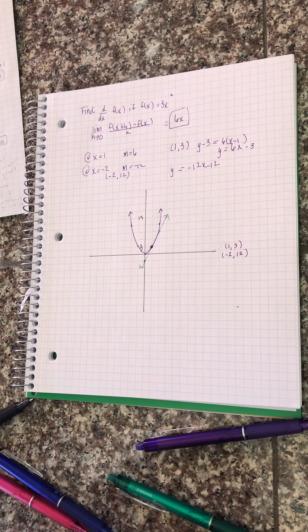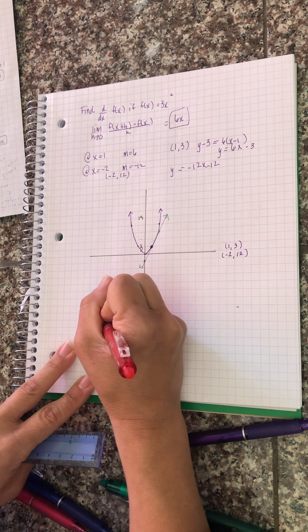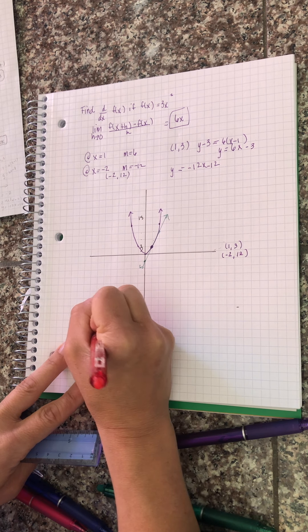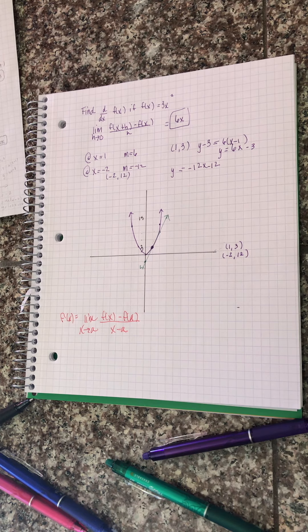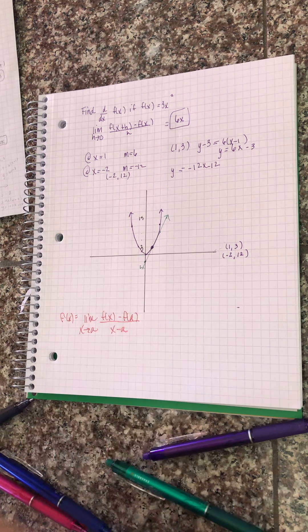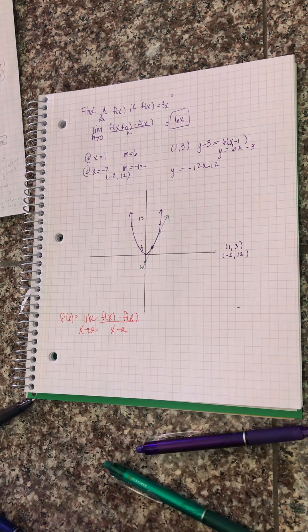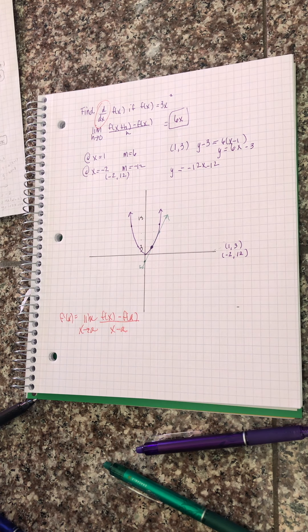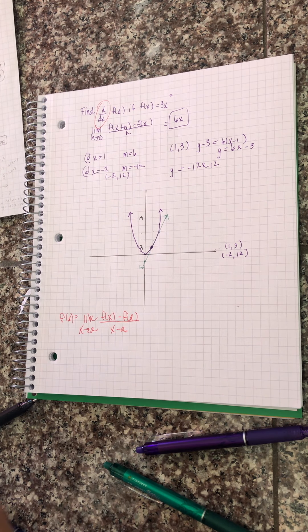I don't have to redo f of x minus f of a over x minus a each time — this is going to work for all values of x. That notation is derivative notation, just one of the many forms. It's like forms of a line: there's slope-intercept form, standard form, point-slope form, but it all gives you a line. Same exact thing — all of these give you the derivative, which is the slope of a curve at a certain point.